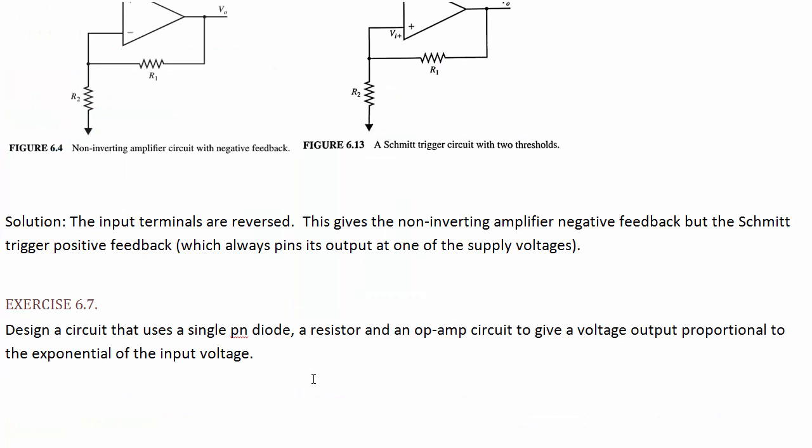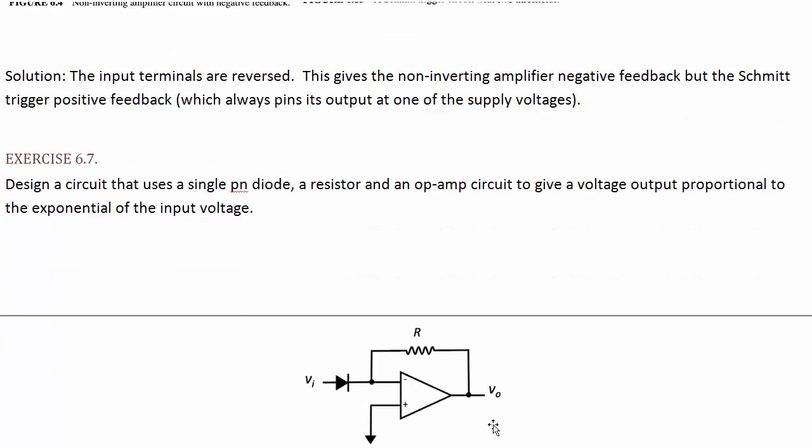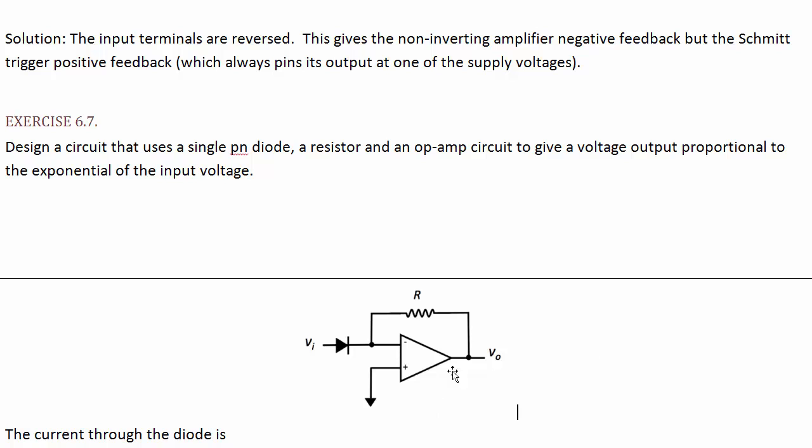Before we get to some comparator exercises, we've got two op-amp problems in general. Design a circuit that uses a single PN diode, a resistor and an op-amp circuit, to give a voltage output proportional to the exponential of the input voltage. This is a bit challenging to do without getting a feel for how it works. If you're able to do it, great. If not, here it is.